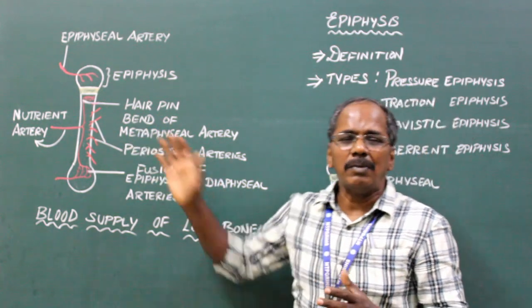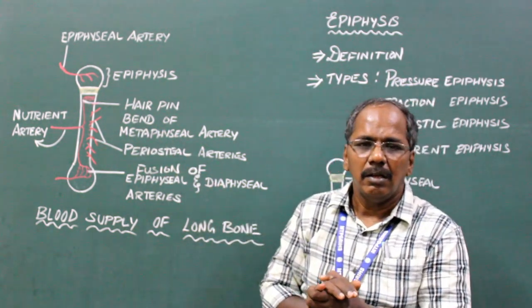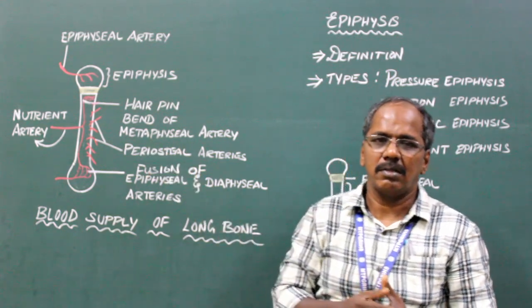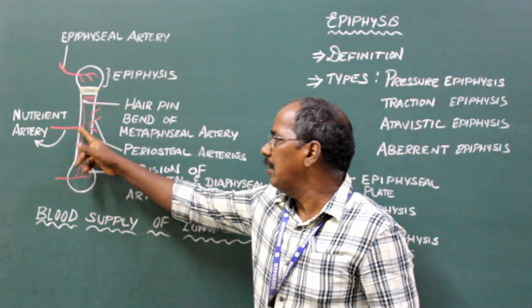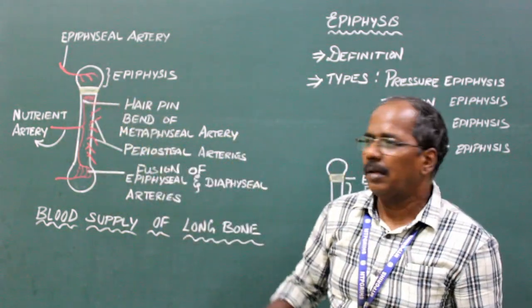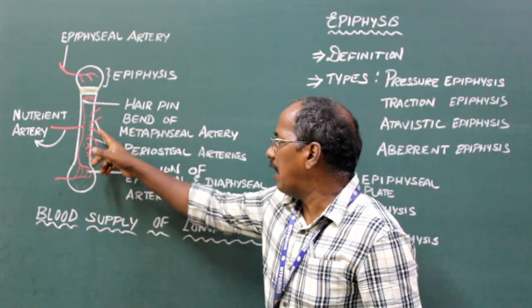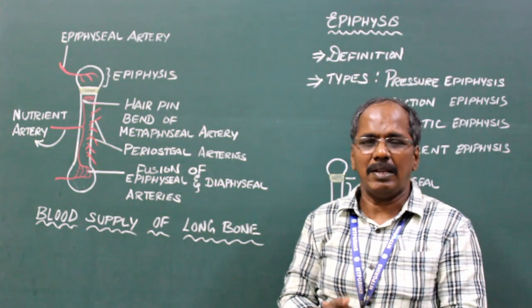A typical long bone has blood supply from the following sources: 1. Nutrient artery, 2. Epiphysial artery, 3. Periosteal arteries, 4. Metaphysial artery.